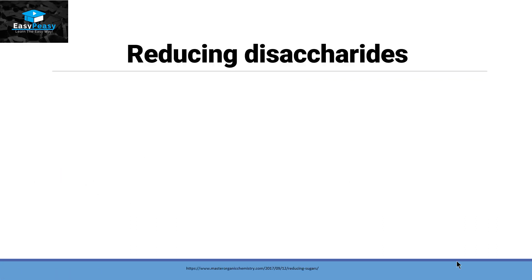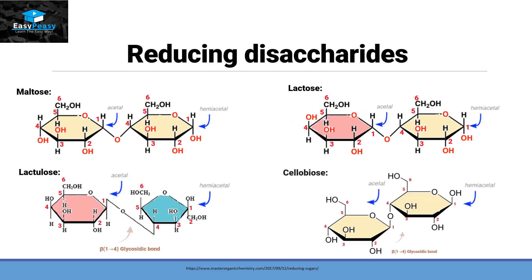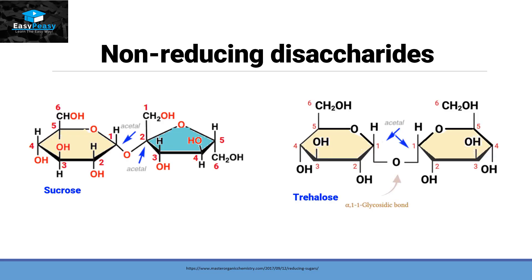The disaccharides under the category of reducing disaccharides are maltose, lactose, lactulose, and cellobiose. In all these compounds, one acetal group and one hemiacetal group are present, so a free hemiacetal group is available on carbon number one of each compound. On the other hand, the non-reducing disaccharides are sucrose and trehalose. In these compounds, two acetal groups are present and none of the units have a free hemiacetal group available.